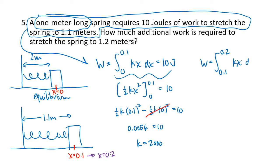Well, again, it's going to be the integral of kx dx, but now we know what k is. This is 2,000x. So we take the antiderivative of 2,000x, that's going to be 1,000x². Plug in 0.2, plug in 0.1, and subtract. So we get 1,000 times (0.2² minus 0.1²). That's going to work out to be 30 joules.